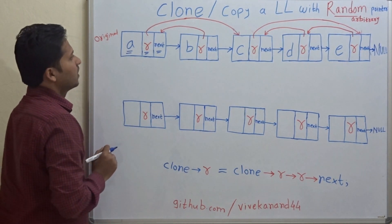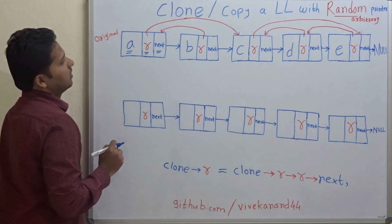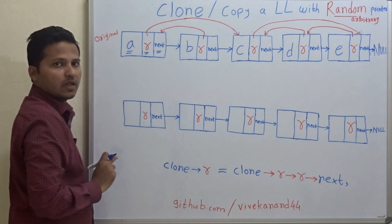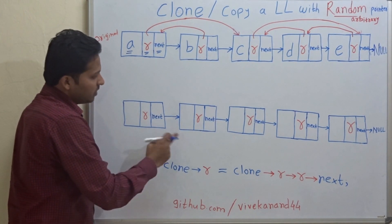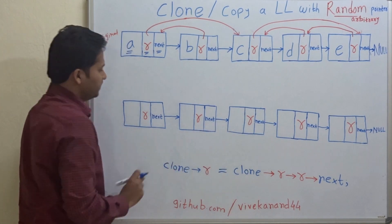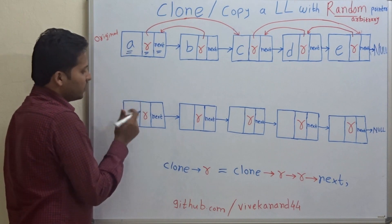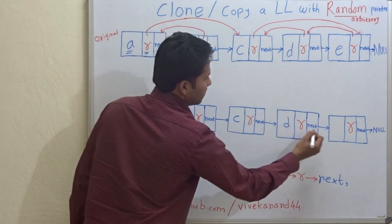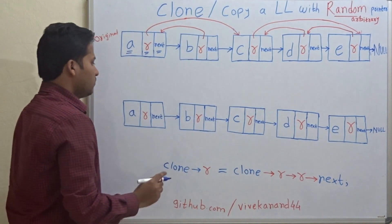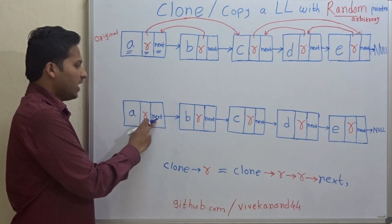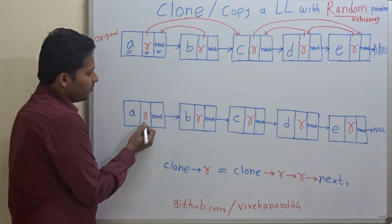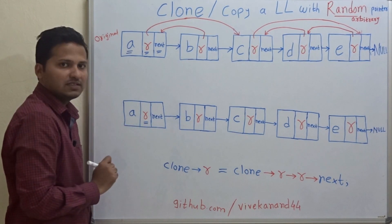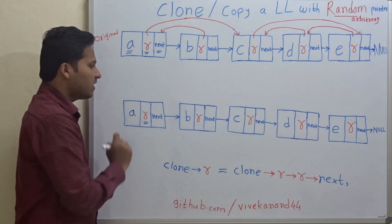The first step is to create another linked list with the same data. We assign the memory and create the nodes. The first node is A, then B, C, D, and E. Now our linked list with the next pointer and the random pointer is ready, but the random pointer in this linked list holds null — it does not hold any address because we have not assigned any address to it yet.